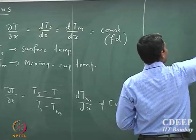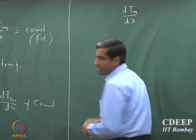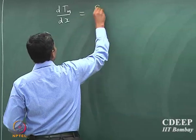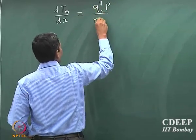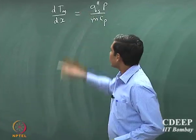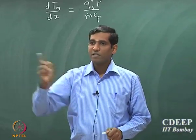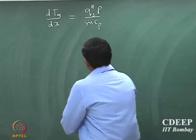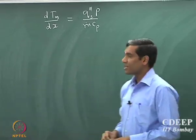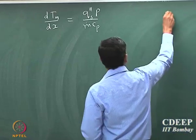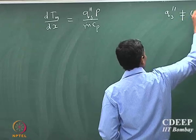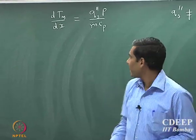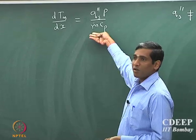We said that dTm/dx — we wrote an overall energy balance for the mixing cup temperature and found that it equals Qs' divided by ṁCp. The minus sign will depend upon the direction of heat transport from the fluid to the surroundings or surroundings to the fluid. Now if it is a constant temperature case, the flux Qs'' is not constant. In the last lecture we showed the mixing cup temperature profile when the flux is constant.